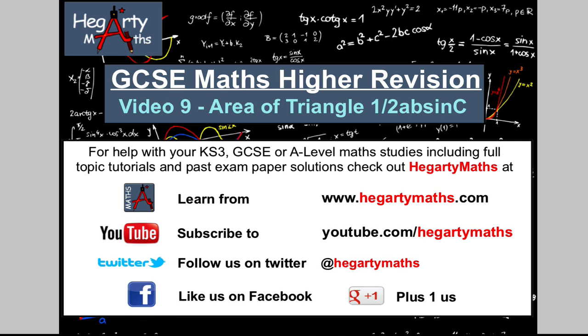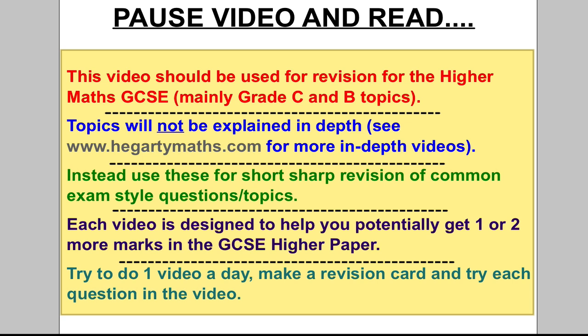Hi there and welcome to another video. It's Mr. Hegarty here and this is our ninth revision video for the higher paper. We're talking about the area of a triangle using half AB sine C. This is quick focused revision so you can pick up some easy grade B and C marks quickly and practice questions. What I'm going to do is have you take a revision card down based on my examples and then you're going to try an exam question.